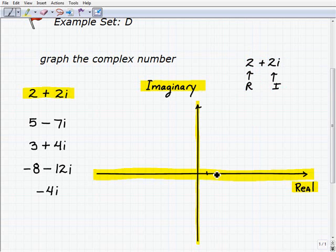So 1, 2 on the real number axis is right there, and 2i is right here. That's 1i, that's 2i. So that's the point right there, 2 plus 2i. And that's plotted on the complex number plane.